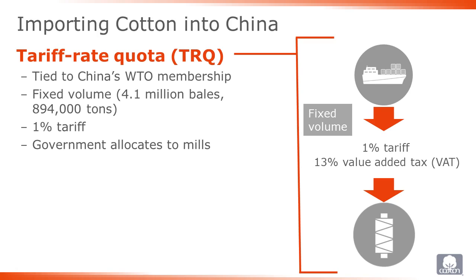The first possibility for bringing cotton into China is known as tariff rate quota, or TRQ. Part of China's accession to the WTO in 2001 required China to allow a certain volume of cotton to be imported at low duty rates. This volume was set at about 4 million bales and is assessed at a 1% tariff. Each year, the government decides how to allocate TRQ imports to mills.